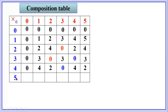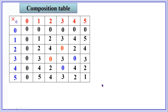Now let us fill the last row headed by number 5. 5 into 0 is 0, 5 into 1 is 5, 5 into 2 is 10 — when 10 is divided by 6, the remainder is 4. 5 into 3 is 15 — when 15 is divided by 6, the remainder is 3. 5 into 4 is 20 — when 20 is divided by 6, the remainder is 2. Thus we have completed the table.